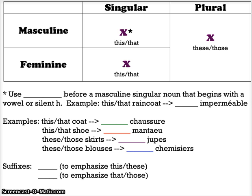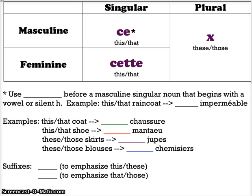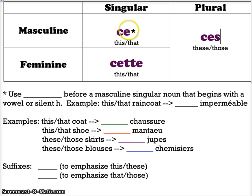If you want to say this or that and your noun is a masculine singular noun, you will use the word ce. If your noun is a feminine singular noun, you will use the demonstrative adjective cette. In the plural, masculine and feminine use the same form, so you don't have to worry about gender — they both use the word ces. So we have ce, cette, ces.